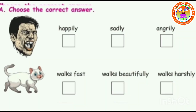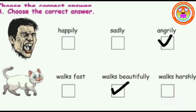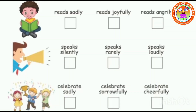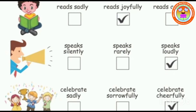Children, let us see some book exercises. Section A: choose the correct answer. See the first picture — options: happily, sadly, angrily. Second picture — walks fast, walks beautifully, walks harshly. Answers: the face is looking angrily. Cat walks beautifully. Third picture — read sadly, read joyfully, read angrily. Fourth picture — speaks silently, speaks rarely, speaks loudly. Last one — celebrate sadly, celebrate sorrowfully, celebrate cheerfully. The answers are: he reads joyfully — joyfully is an adverb. He speaks loudly — loudly is an adverb. They celebrate cheerfully — cheerfully is an adverb.